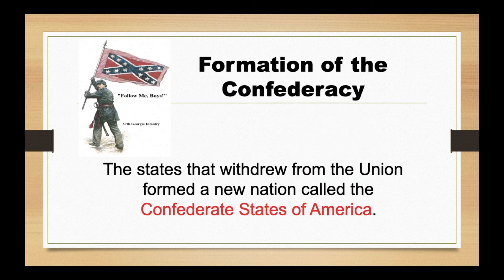With all these states withdrawing from the union, they needed to form a government and become a real nation with the power and structure they needed. All the states that withdrew from the union called themselves the Confederate States of America.